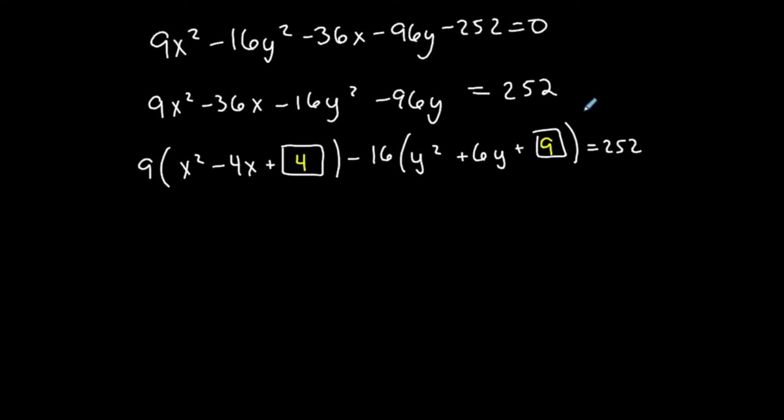But remember that technically I didn't really add 4 to the left, because I placed that 4 inside parentheses that have a 9 outside of it. So I really added 9 times 4, or 36. So I need to really add 36 to the right-hand side. Now I didn't really add 9, correct? I added negative 16 times 9. So be careful with that negative. I really added a negative 16 times 9, which is a negative 144. So I have to do the same thing to the right-hand side. So again, if I were to distribute this out and go back to the beginning, it's the same thing that I had to begin with.